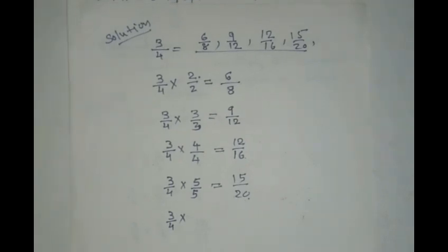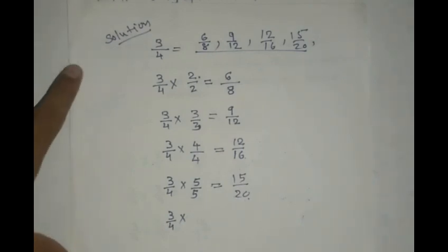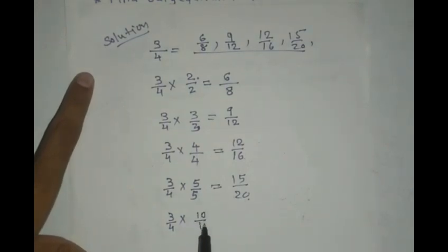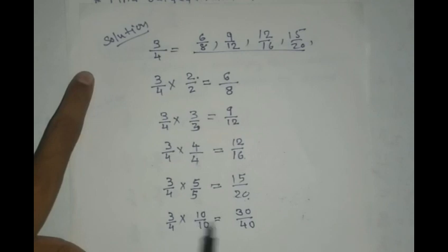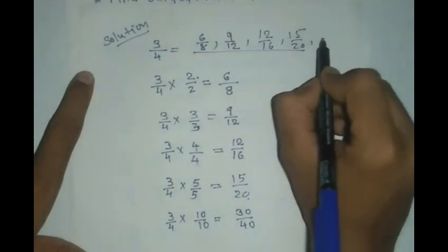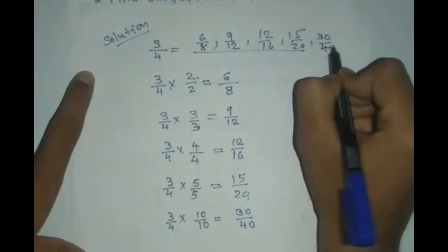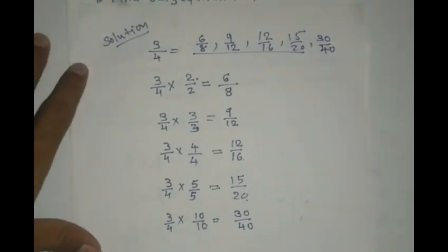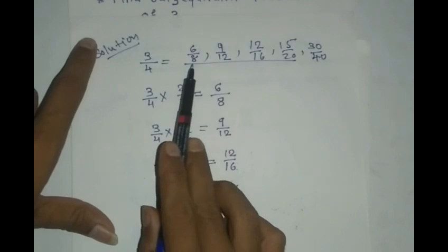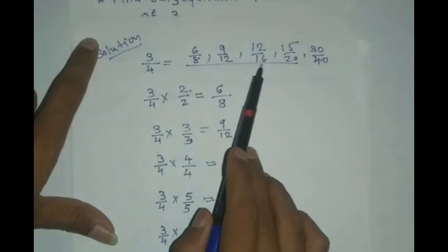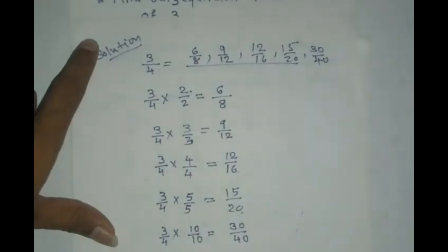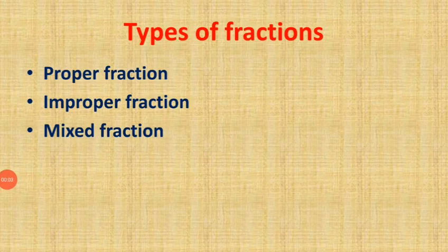You can take any whole number to find equivalent fractions — you don't have to take them in series like two, three, four, five only. Now I am taking ten: three tens are thirty, four tens are forty — so thirty upon forty is the fifth equivalent fraction. So the five equivalent fractions of three upon four are six upon eight, nine upon twelve, twelve upon sixteen, fifteen upon twenty, and thirty upon forty.